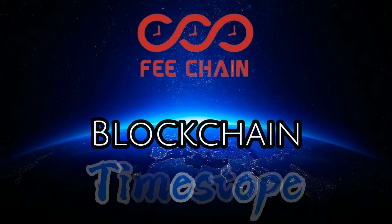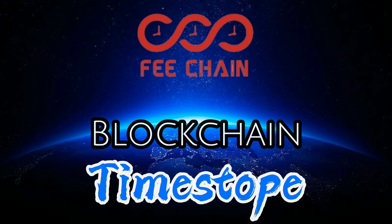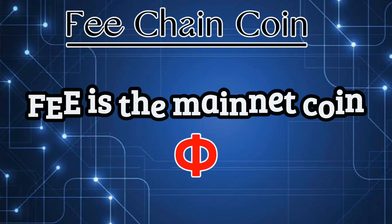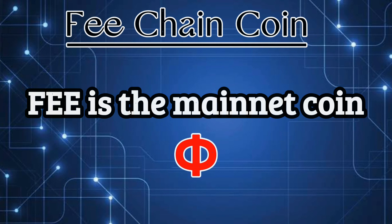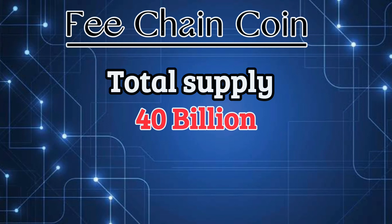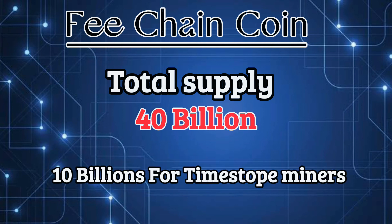FeeChain Mainnet is a revolutionary blockchain developed by the Timestope platform. It works on a proof-of-stake principle and uses a docking system which makes it modifiable in the future when new technologies are invented. Every blockchain has its own coin — Fee is the main coin of FeeChain Mainnet. Initially, the total supply of FeeCoin will be 40 billion, out of which 10 billion are kept by the core team for project maintenance and 10 billion will be distributed to the miners of Timestope platform in proportion to their mining span.